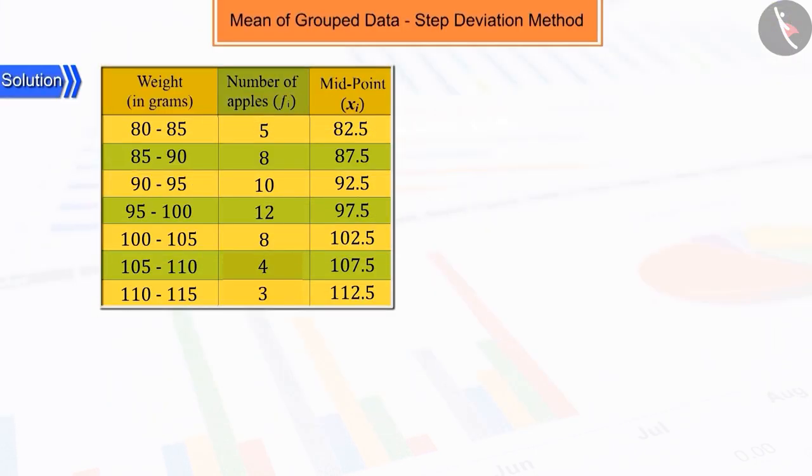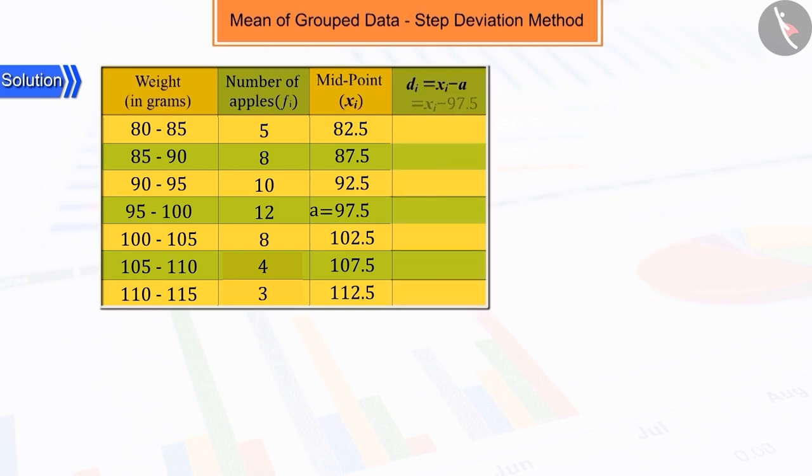To simplify the mean, assume 97.5 as the assumed mean A from among the xi and obtain the mean difference di between xi and A.